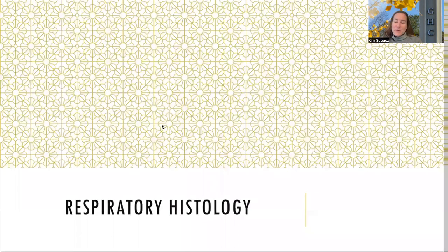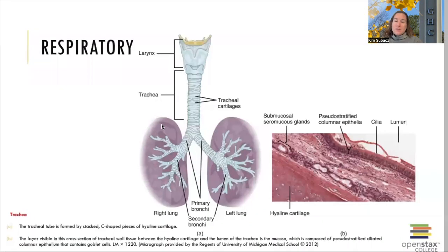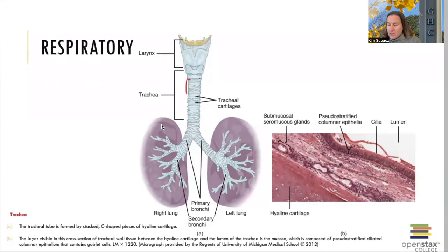Hey guys, so in this video we are going to go over the respiratory system's histology that we need to know for lab. With the respiratory system, I've got an OpenStax picture of the passageway coming down. We've got the trachea coming off the larynx, and we've got all those hyaline cartilage rings that we're going to look at in a little bit.